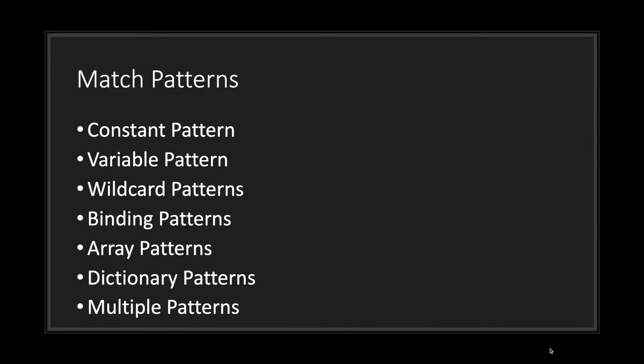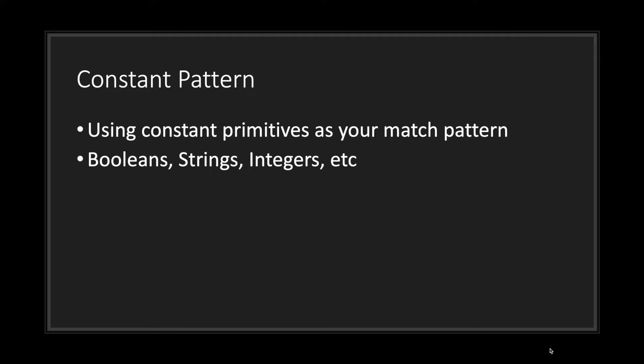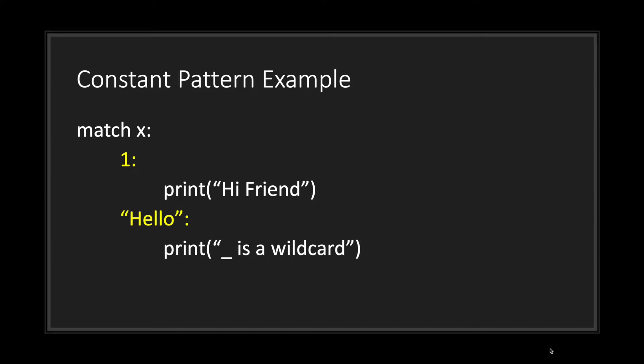There are seven different types of match patterns you may find yourself using in GDScript: the constant pattern, variable pattern, wildcard pattern, binding pattern, array pattern, dictionary pattern, and the multiple pattern. The constant pattern is very simple — it's basically just primitive data types like booleans, strings, and integers. For example, if X is either the integer 1 or the string 'hello' — keep in mind that strings are case sensitive.